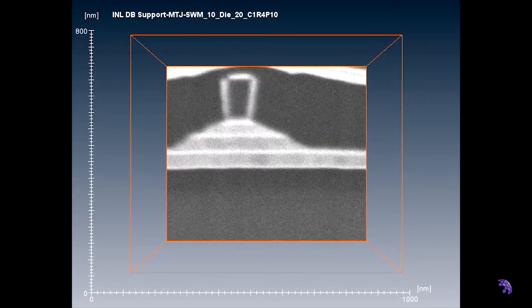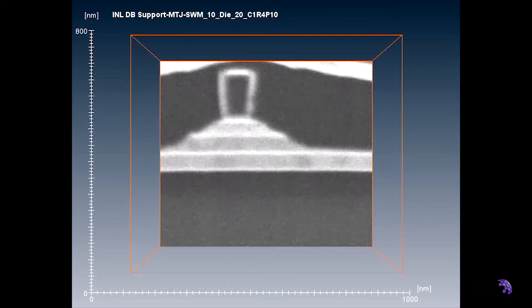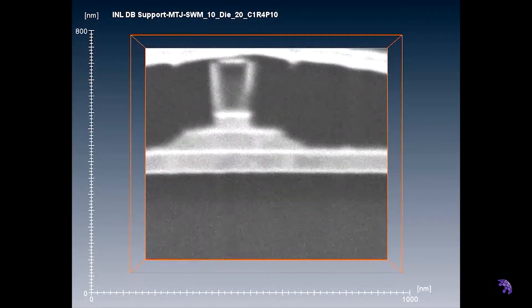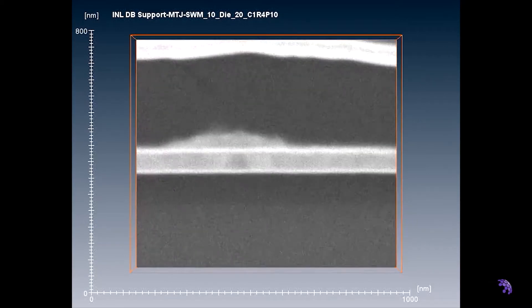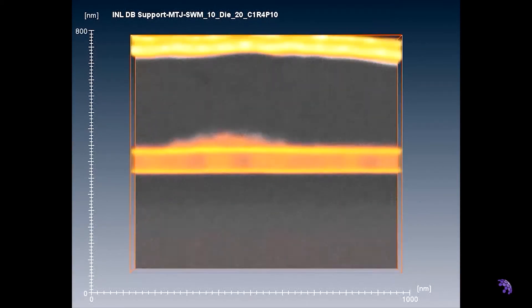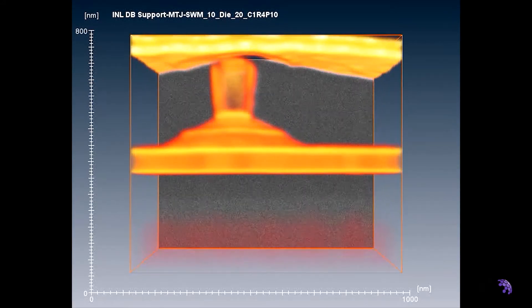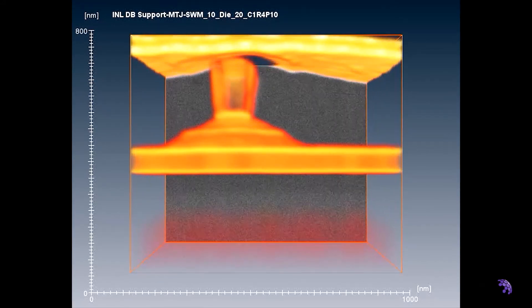By cutting an individual nanodevice in a controlled pattern and looking at the structure revealed in each cut, we can build up a three-dimensional view of what the device looks like. This measured three-dimensional structure can be compared to the original design to help optimize the fabrication.